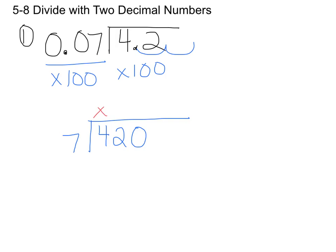In fact, it seems to me that if 7 times 6 is 42, 7 times 60 is going to get me 420. And there's our quotient.